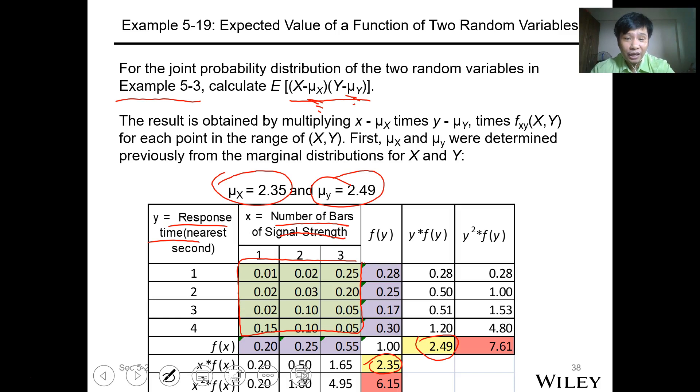To get this, for each variable you subtract the mean for X and for Y. You subtract them. For example, this portion: we have 1 minus 2.35 times 1 minus 2.49 times the probability specified for that combination, which is 0.01.